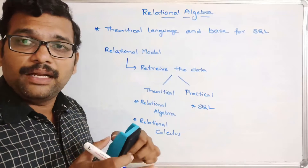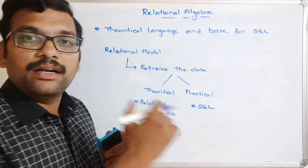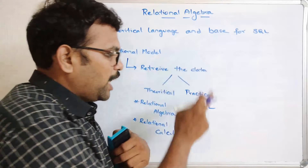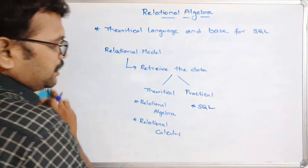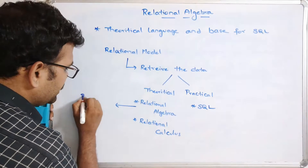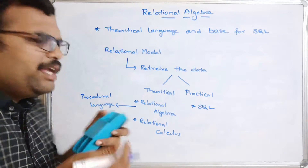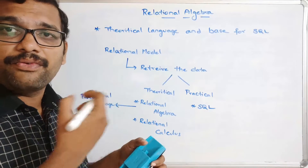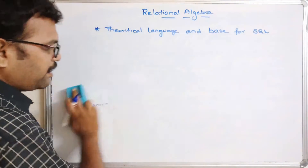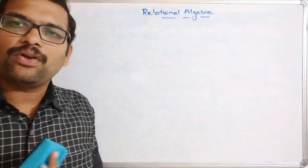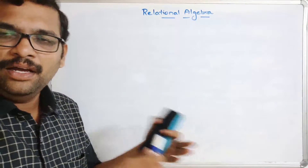In the relational model, if you want to get data practically, we have to write queries. Without using SQL, we can't get data from a table. So in order to write queries, we first need knowledge of relational algebra. Relational algebra is a procedural language — we give some condition and based upon that condition, the data is retrieved from the table. In this session, we'll discuss the basic operations and different operators available in relational algebra.